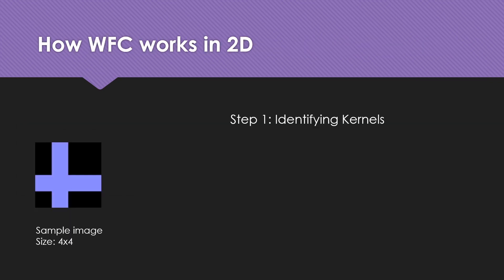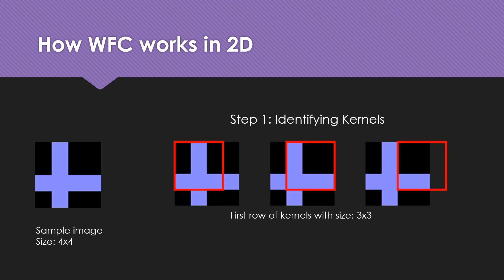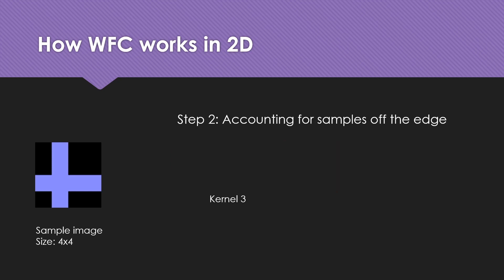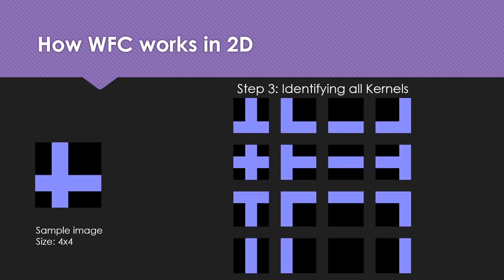In two dimensions, wave function collapse accepts an input sample and identifies subsections called kernels. It identifies the first row of kernels of size 3x3. For the third kernel, since the kernel exceeds the bounds of the image, we infinitely wrap around the image until enough area can be sampled. Once we sample the kernels, we end up with a set of kernel patterns.